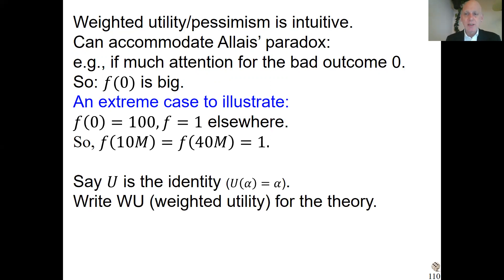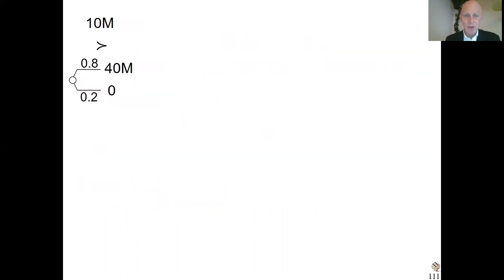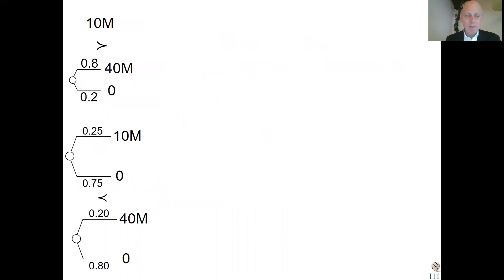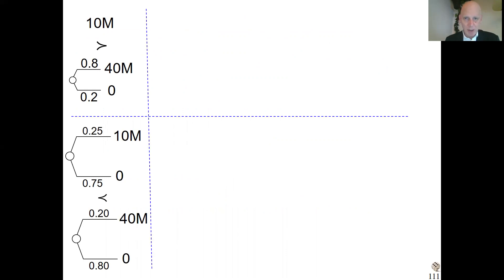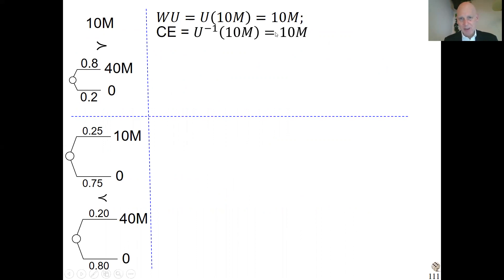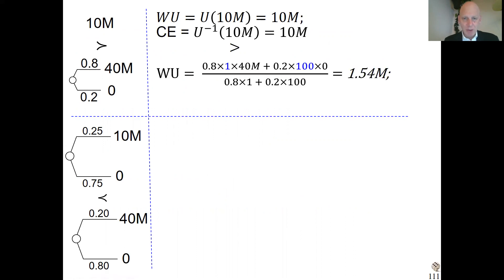Let's assume that utility is the identity to keep it simple. Here are the preferences of the Allais Paradox. The weighted utility of the upper prospect is just due to 10 million, so that is 10 million. The certainty equivalent is then just 10 million — that's trivial. For the second lottery, it's going to be smaller. The weighted utility here has the f function coming in in a non-trivial manner.